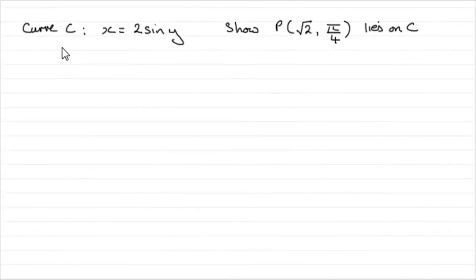Hi, now here's a very easy question to start this one off. We've got the curve C is such that x equals 2 sine y, and we've got to show that this point P, which has coordinates root 2, pi upon 4, lies on the curve C.